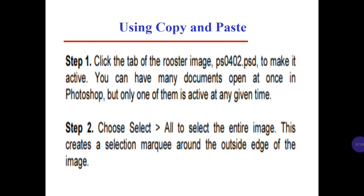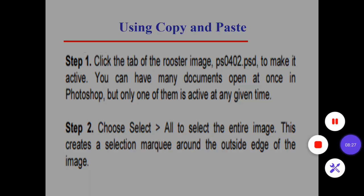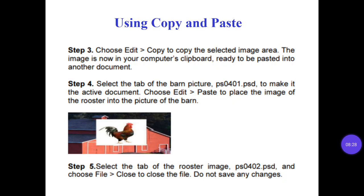Using copy and paste. Step number 1: click the tab of the Rooster image to make it active. You can have many documents open at once in Photoshop, but only one of them is active at any time. Step number 2: choose Select All to select the entire image. This creates a selection mark around the outside edge of the image.